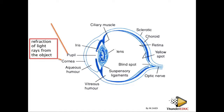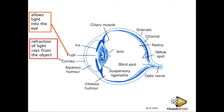Number two is the pupil. The pupil is the space between the iris on either side. This space is what is called the pupil. The function of the pupil is to allow light to enter into the eye through that space, so that light can be focused inside the eye.